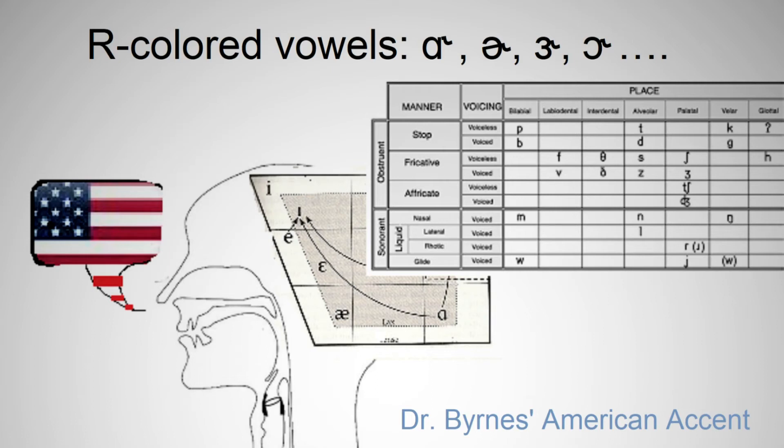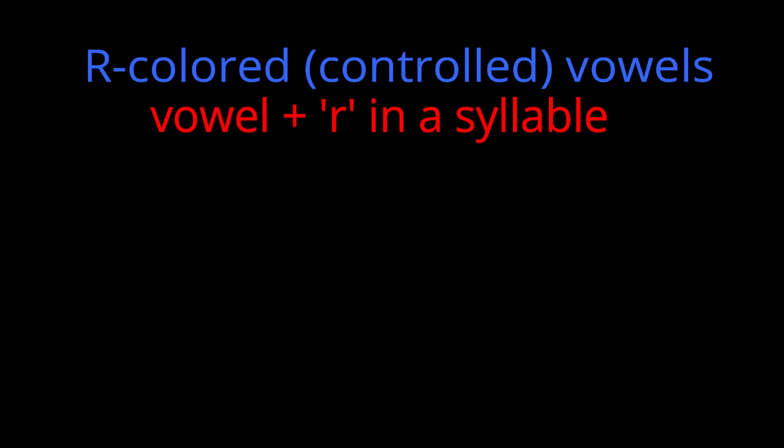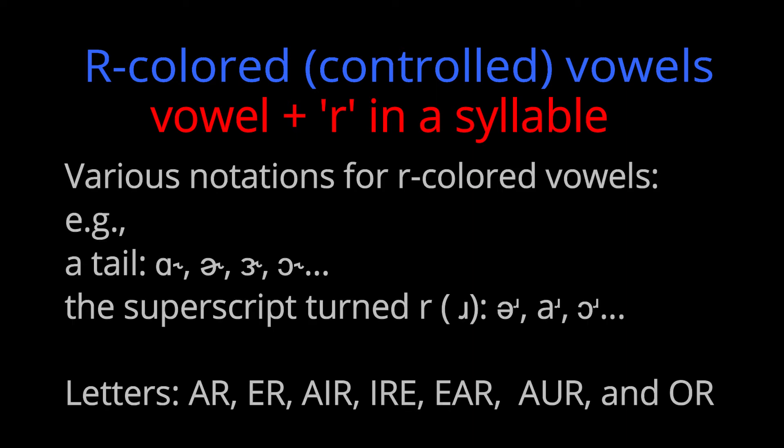In this episode, we learn R-colored vowels. In American English, when R comes after a vowel, the R sound is pronounced. The combined sound is called an R-colored vowel or R-controlled vowel.